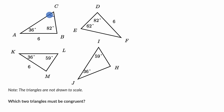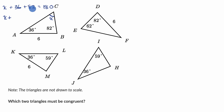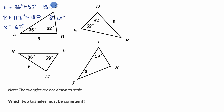First, what is the measure of angle ACB? If we call that angle X, we know that X plus 36 plus 82 must equal 180. So X plus 118 equals 180, and subtracting 118 from both sides gives us X equal to 62. So this is a 62-degree angle.